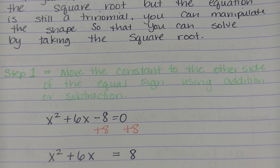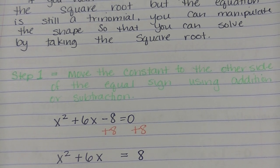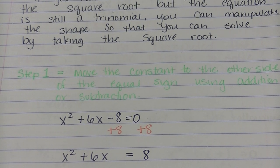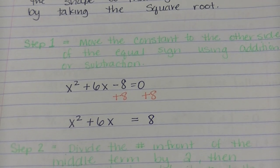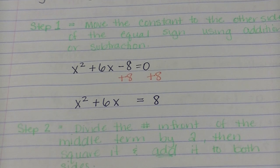So in our example, I've got x squared plus 6x minus 8 equals 0. To get rid of that 8, I'm going to add 8 to both sides. So then I'm just left with x squared plus 6x equals 8.